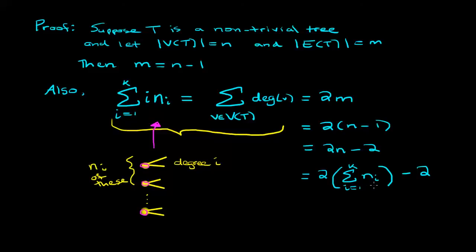Remember that n_i is just the number of vertices of degree i, so if you sum them all up you'll get the total number of vertices.